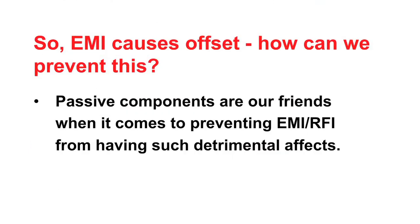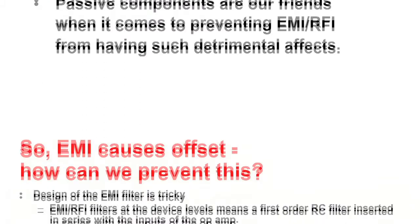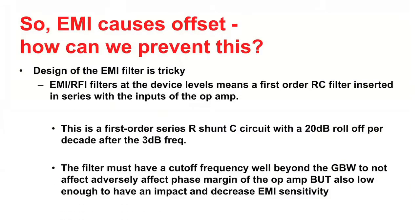In the op-amp world, we can protect our op-amps from RF fields by using our passive components, already internal to the op-amp, as our best weapons. EMI filters at the device level are simply first-order RC filters inserted in series with the inputs of the op-amp.